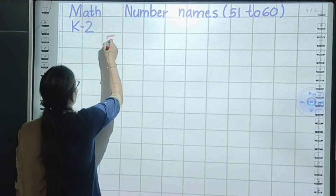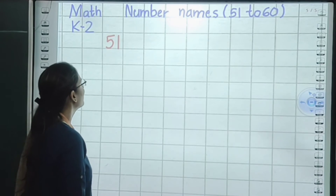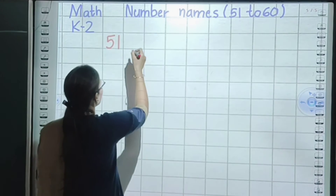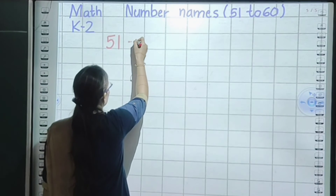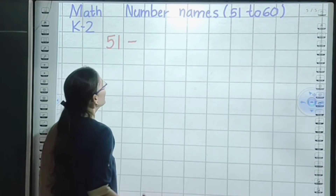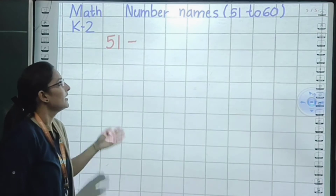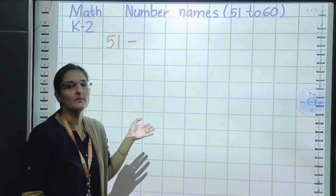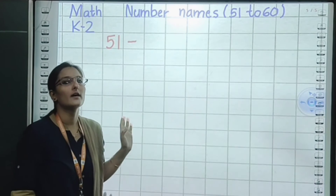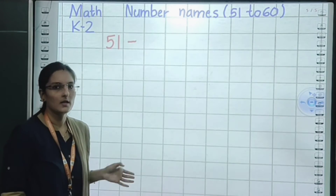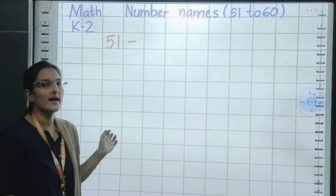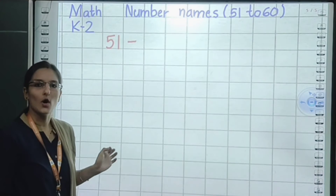From 51 to 60. In the last video, we have learnt number names from 1 to 50. How many number names did we learn till 50? Properly 50, and today we will learn 51 to 60.